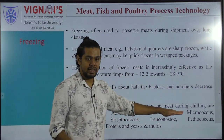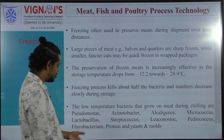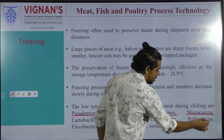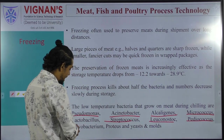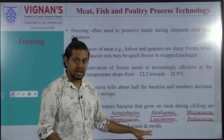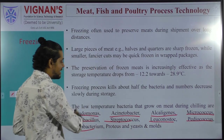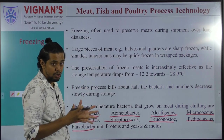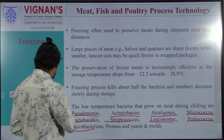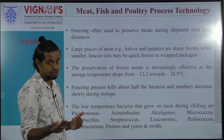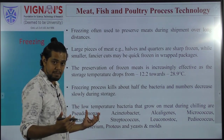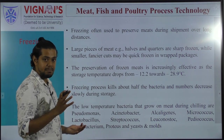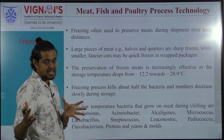Most mesophiles, thermophiles, and thermodurics are destroyed due to the decrease in temperature. Only psychrotrophs and psychrophiles survive and can grow at freezing temperatures. Microorganisms that can grow at chilling and freezing temperatures include bacteria such as Pseudomonas, Acinetobacter, Alcaligenes, Micrococcus, Pediococcus, Leuconostoc, Streptococcus, Lactobacillus, Flavobacterium, and Proteus, as well as fungi including yeast and mold.